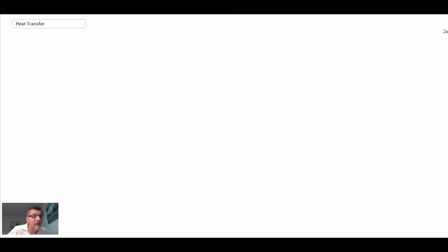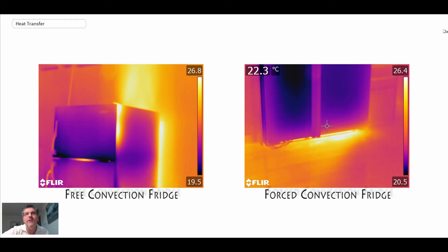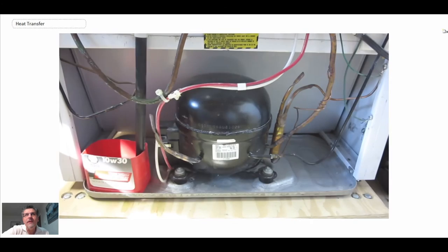The next area is household refrigeration. Used to be done by bringing in a block of ice for the ice box, but through development of the refrigeration cycle using different working fluids, we now have the convenience of home refrigeration. We'll look at two different types: a free convection refrigerator and a forced convection refrigerator.